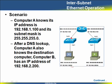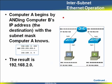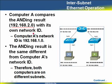We know our subnet masks. Computer A is configured with the default gateway IP address and needs to talk to Computer B. It finds out Computer B's IP address through a DNS lookup, just like before. Now we go through the ANDing process again: we take Computer B's destination IP address and AND it with Computer A's subnet mask. The result is 192.168.2.0. Computer A compares that with its own network ID, which is 192.168.1.0. These are not the same — therefore they are on different subnets, and we cannot send the message directly to Computer B.